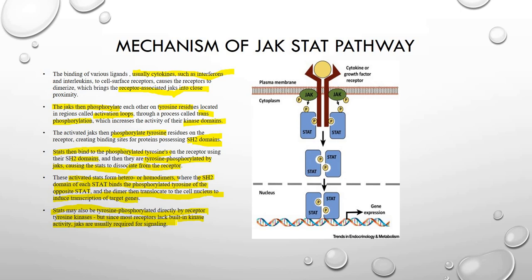On the right-hand side, if you see the diagram, you can see the cytokines or growth factors which are present on the plasma membrane activating the JAK and STAT, which are being phosphorylated. That phosphorylated STAT — signal transducer and activator of transcription — helps in gene expression. This way, we can establish the mechanism of the JAK-STAT pathway and complete the entire signaling pathway discussion.